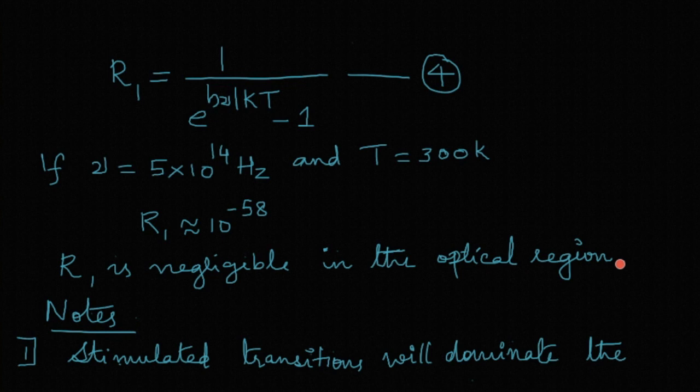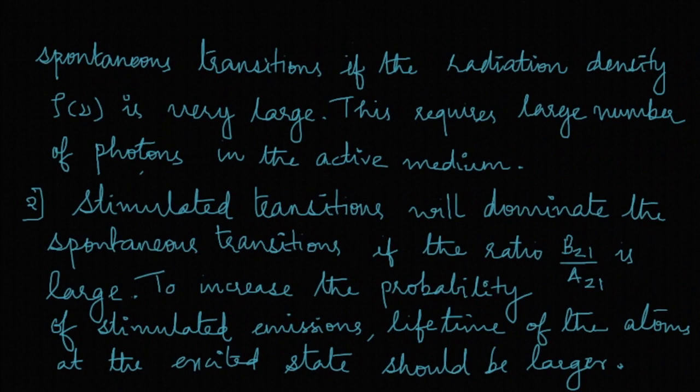Some of the conclusions that we can make from here is that this equation, the R1 equation, indicates stimulated transitions will dominate the spontaneous transitions if radiation density is very large. So in that case we need more number of photons in the active medium for the radiation density to be more, but in that case it will lead to more absorption transition. So only a large number of photon density will not guarantee stimulated emissions, but that is one of the conditions.